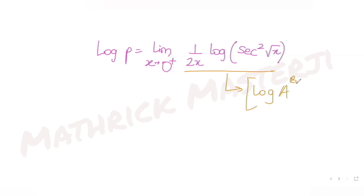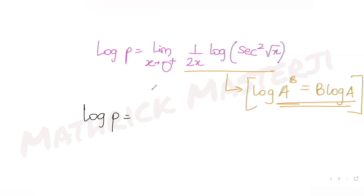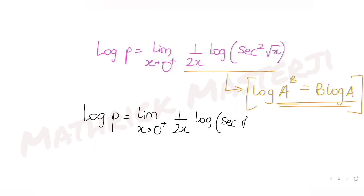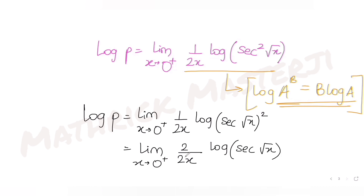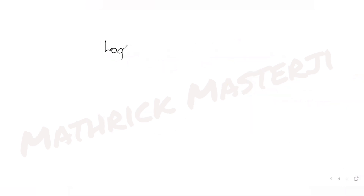Applying the log property log(a^b) = b·log(a) again, I can write log of sec²(√x) as 2·log(sec√x). That brings a factor of 2 out front, giving (2 over 2x), and the two cancels. So log p equals limit x tends to zero plus of log(sec√x) over x.